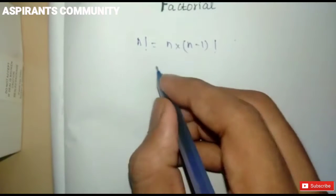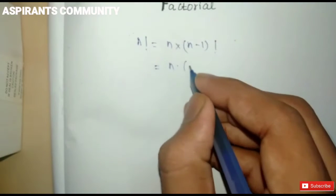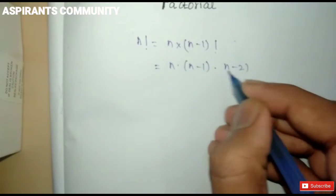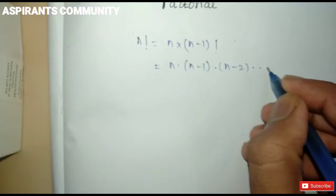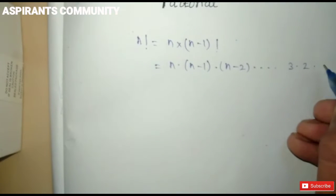That expands to n into (n minus 1) into (n minus 2) into ... 3, 2, 1.